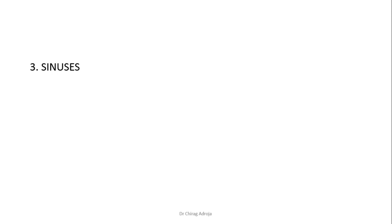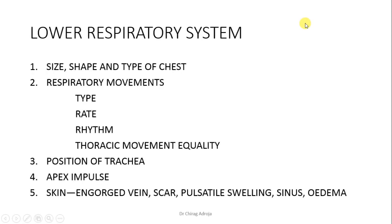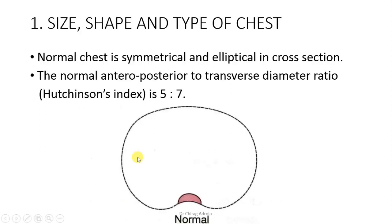Sinuses are also part of respiratory system examination — when patient complains of addiction, always check for sinusitis. Now let's start lower respiratory system. We divide lower respiratory system into five parts: first, size, shape and type of chest; second, respiratory movement — covering type, rate, rhythm, thoracic movement equality; third, position of trachea, apex impulse, and skin.